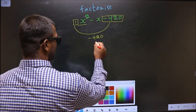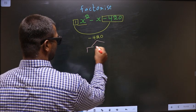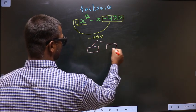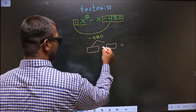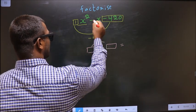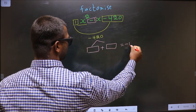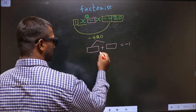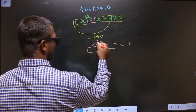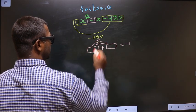Now you look out for two numbers such that when you add these two numbers you get the middle coefficient, that is -1. And also when you multiply you should get -420.